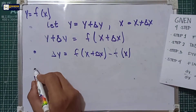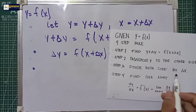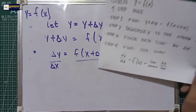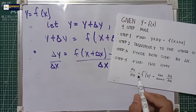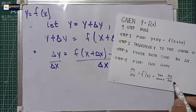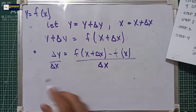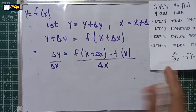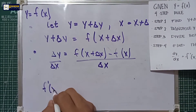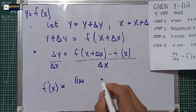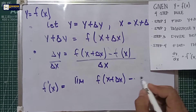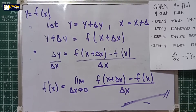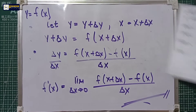In step three, divide both sides by delta x. In step number four, find the limit using dy/dx, or f prime of x is equal to the limit of delta y over delta x as delta x approaches zero. So delta y over delta x substituted into the limit gives us: dy/dx or f prime of x is equal to the limit of f(x plus delta x) minus f(x) over delta x as delta x approaches zero. This is the process we will follow to solve the first principal derivative.